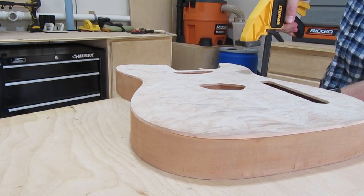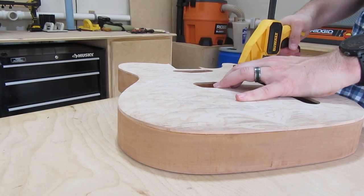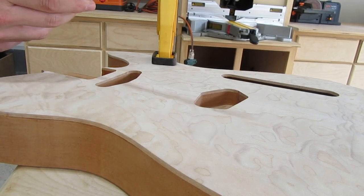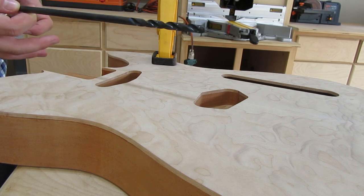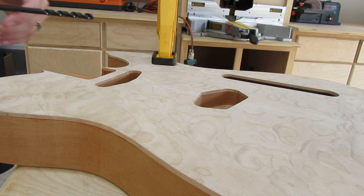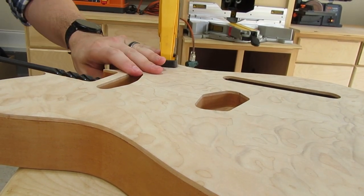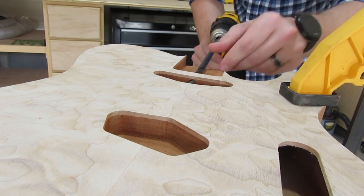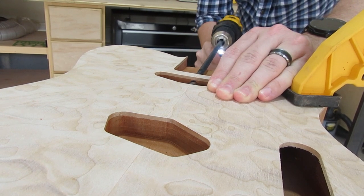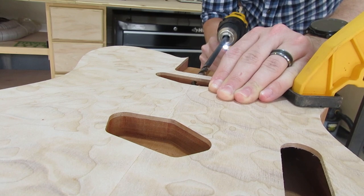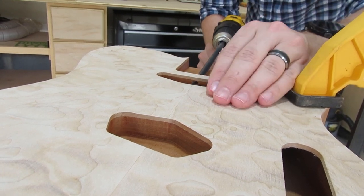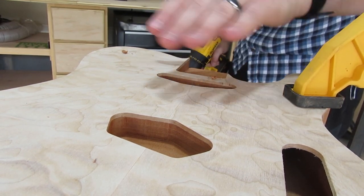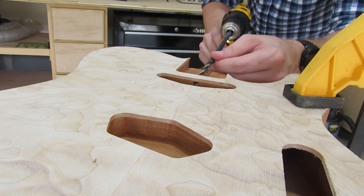I'm going to start here by clamping down my body so that I can drill out the wire channels through the pickup cavities and into the side chamber there so that I can get to the switch and the knobs. Now you have to use a long drill bit for this. This is a 5/16 drill bit. You could use a quarter inch, but the 5/16 is a little bit bigger. It lets you get all three wires through. It's not too difficult. You just have to be careful that you're going in straight.